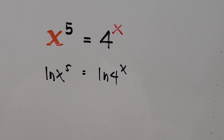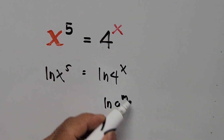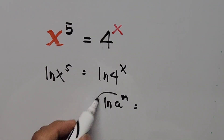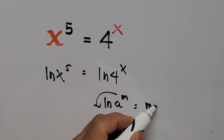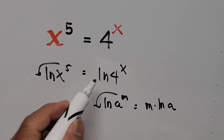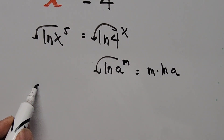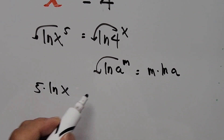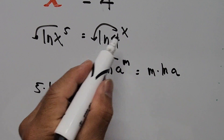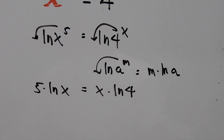Based on the logarithm exponent rule, ln of a to the power of m becomes m times ln of a — we bring the exponent to the front. Applying this to both sides of the equation, we have 5 times ln of x on the left-hand side, and x times ln of 4 on the right-hand side.